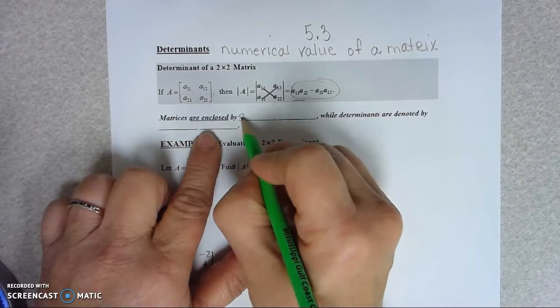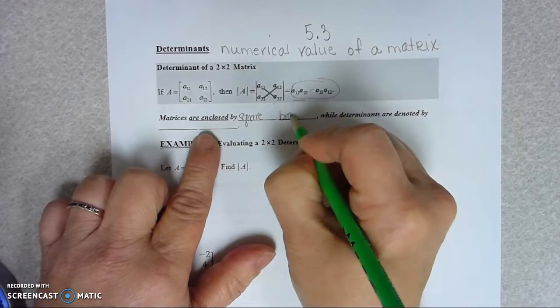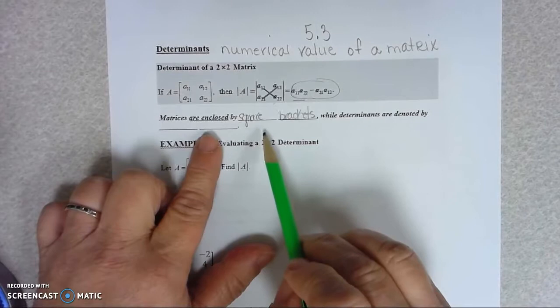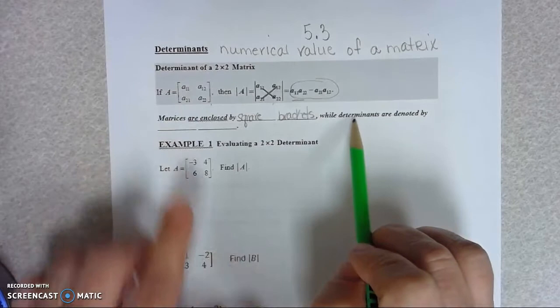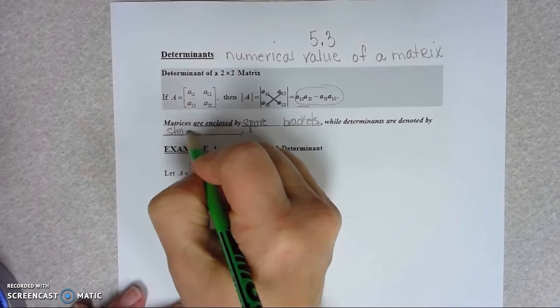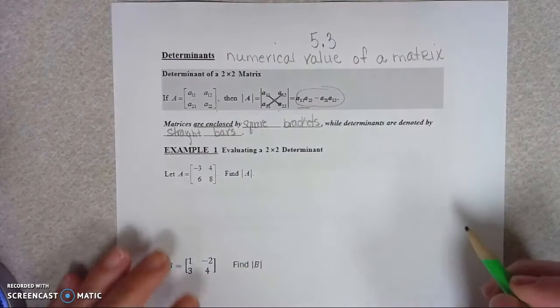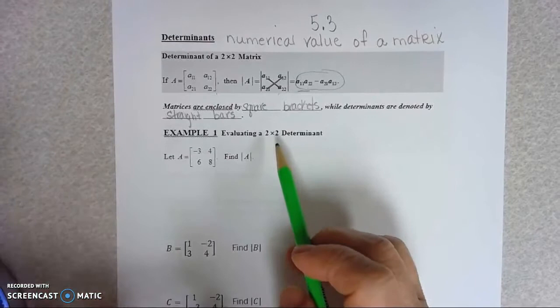Matrices are enclosed by square brackets. So when you see the different symbolisms, you'll know what to expect. Determinants are denoted by straight bars. Because we'll be talking about that more when we talk about Cramer's rule in a second.